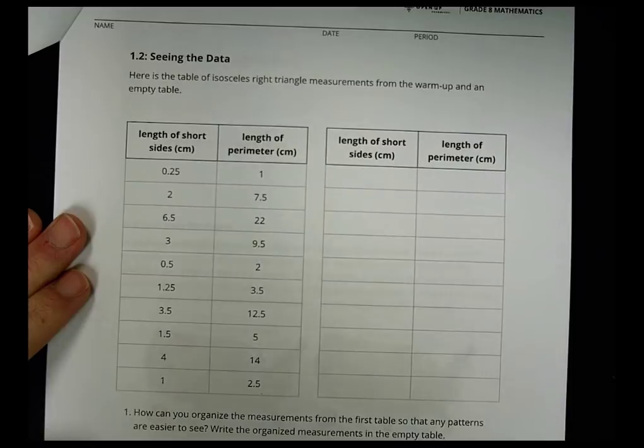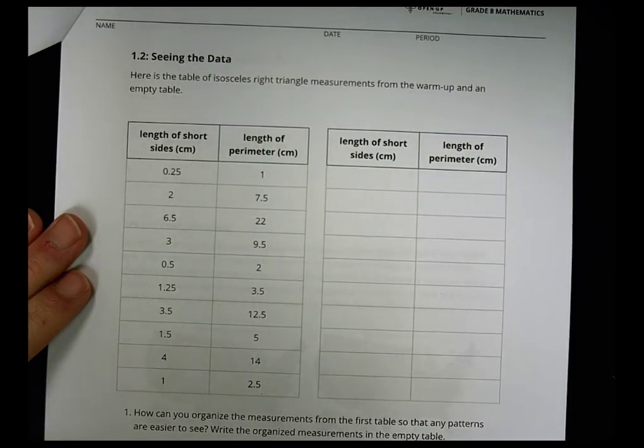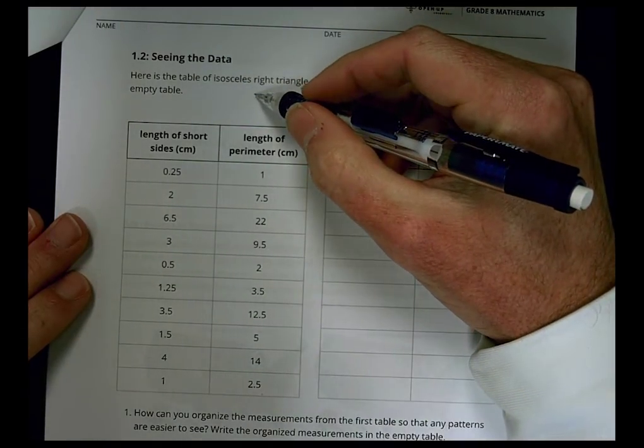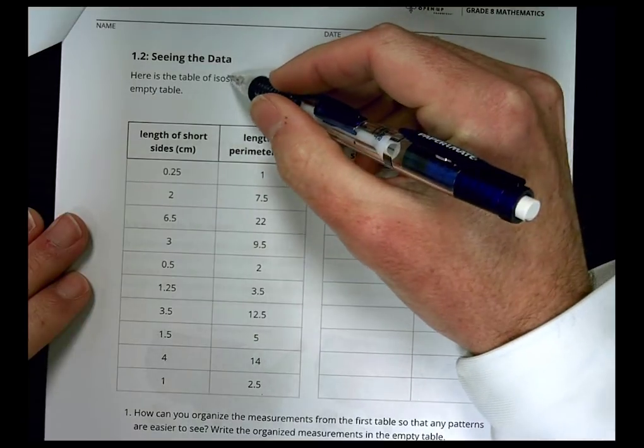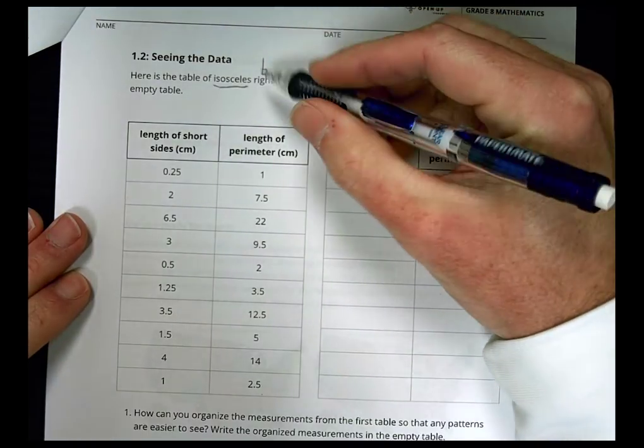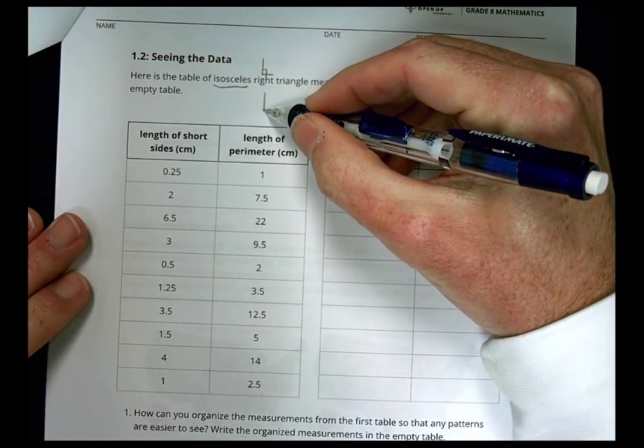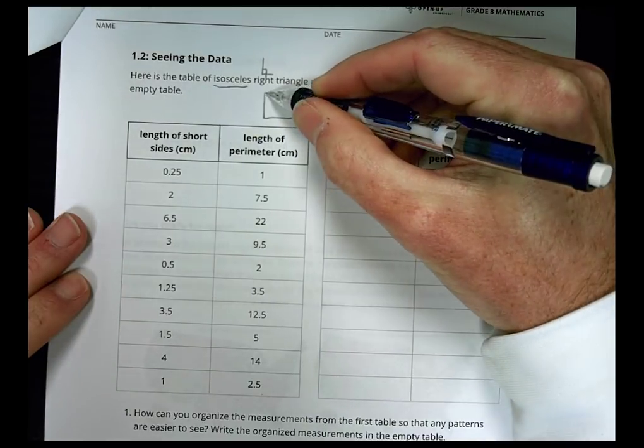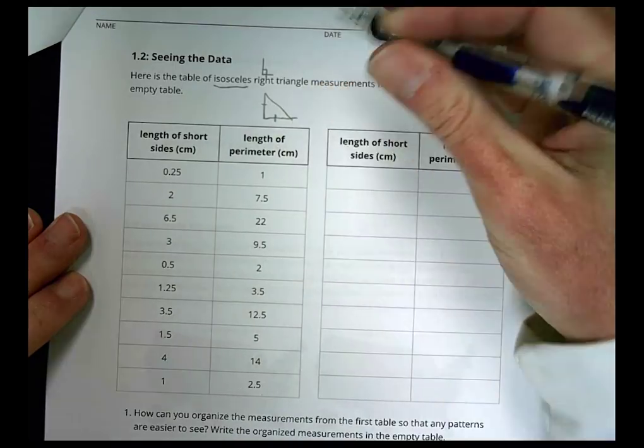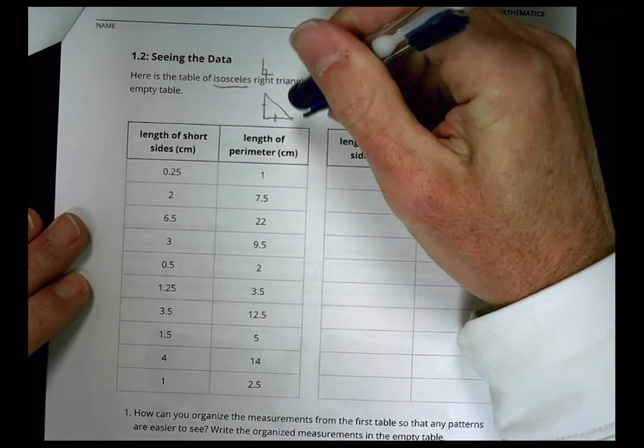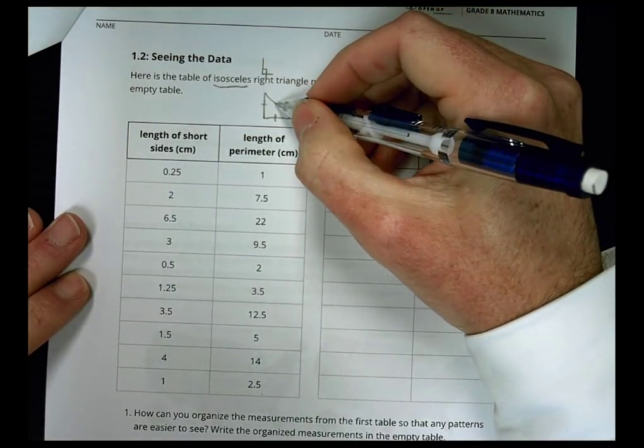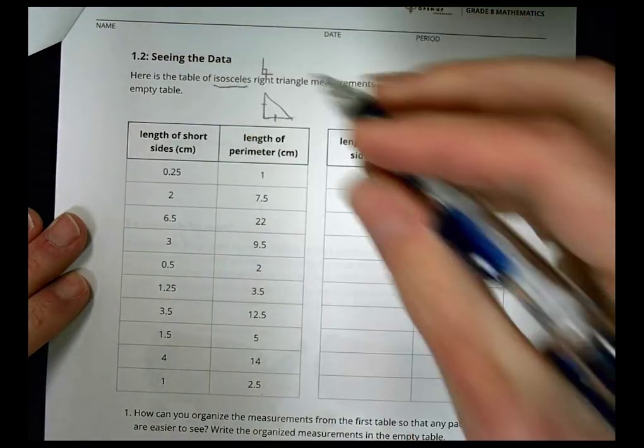Here's a table of isosceles right triangle measurements from the warm-up and an empty table. An isosceles right triangle means it's going to have two sides that are the same, and a right triangle means an angle at 90 degrees. Typically that means you have a triangle that looks like this, where these two lines are the same, and then you have this longer line that goes across.